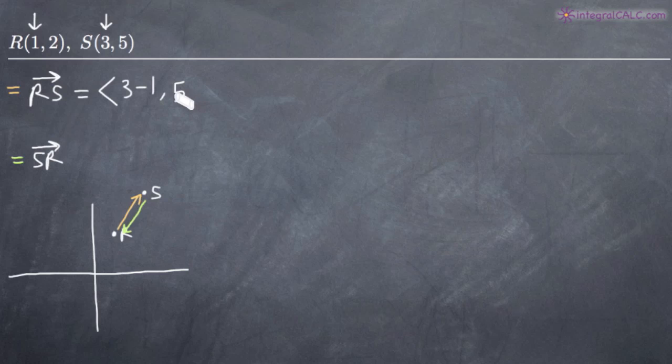Similarly, we're going to take the y-coordinate in point S and subtract from that the y-coordinate in point R. We'll get 5 minus 2. That's just going to give us the vector <2,3>.